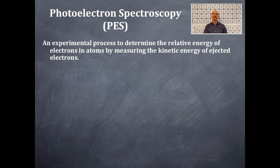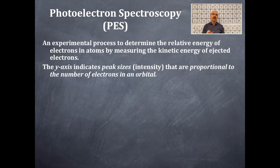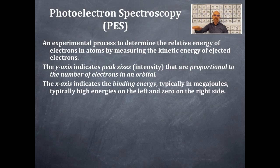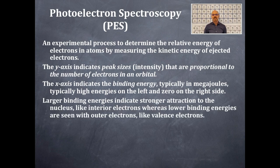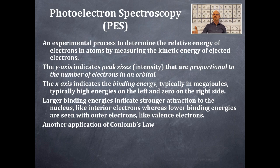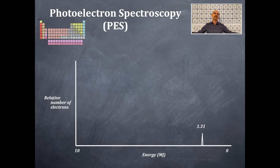PES is an experimental process to determine the relative energy of electrons in atoms by measuring the kinetic energy of ejected electrons. The y-axis indicates the peak sizes — this is the intensity of those peaks — and these are proportional to the numbers of electrons in an orbital. The x-axis is the binding energy, typically in megajoules. High energies are on the left-hand side and zero is on the right-hand side, but you need to be very careful about looking at that x-axis.